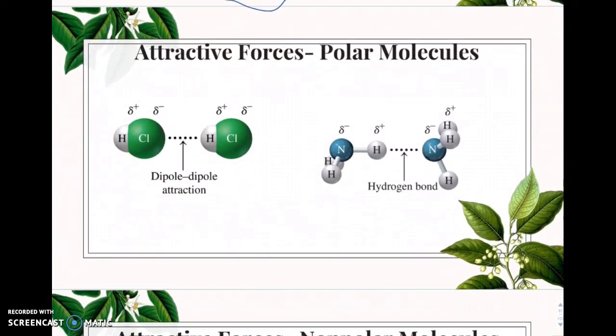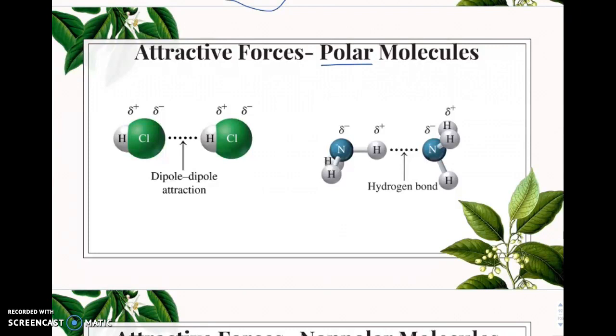So, let's look at these kinds of attractions. If you have polar molecules, you can have a dipole-dipole attraction or a hydrogen bond. A dipole-dipole interaction is the interaction between the negative part of one polar molecule and the positive part of another polar molecule. They have an attraction here. So, we call it dipole-dipole because it's two dipoles being attracted to each other.